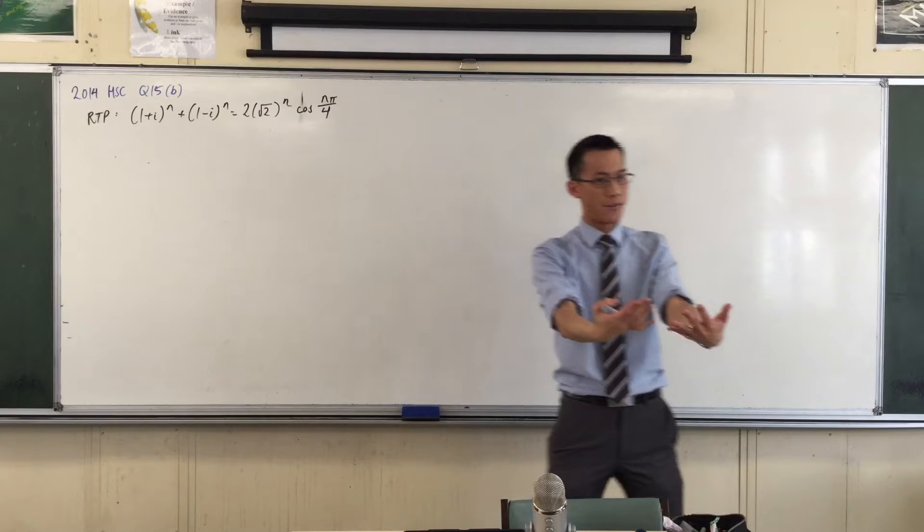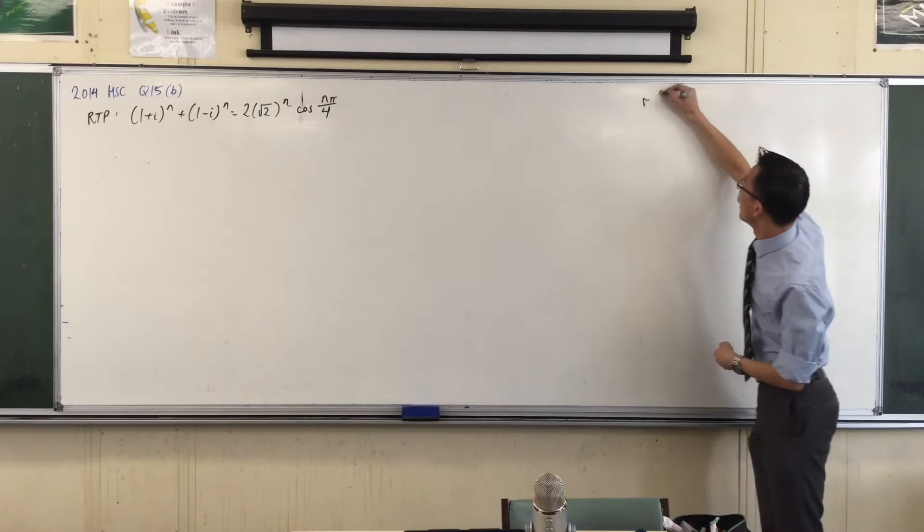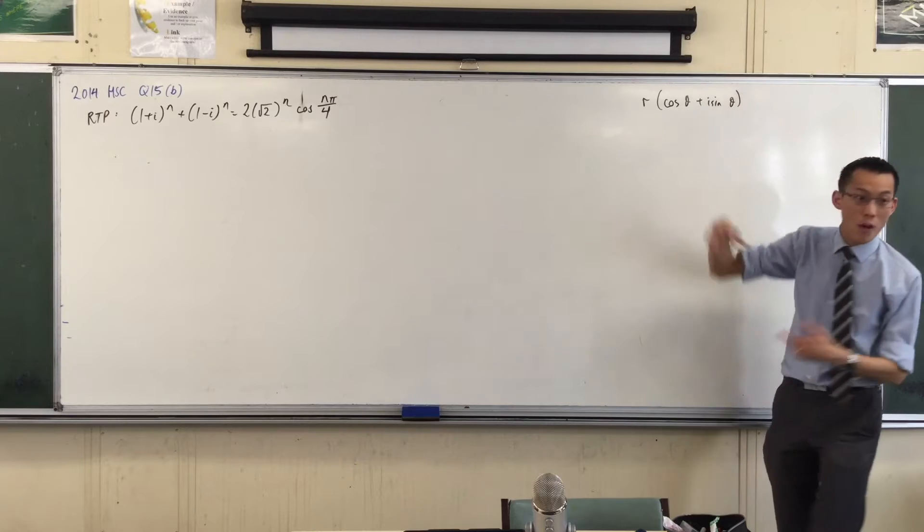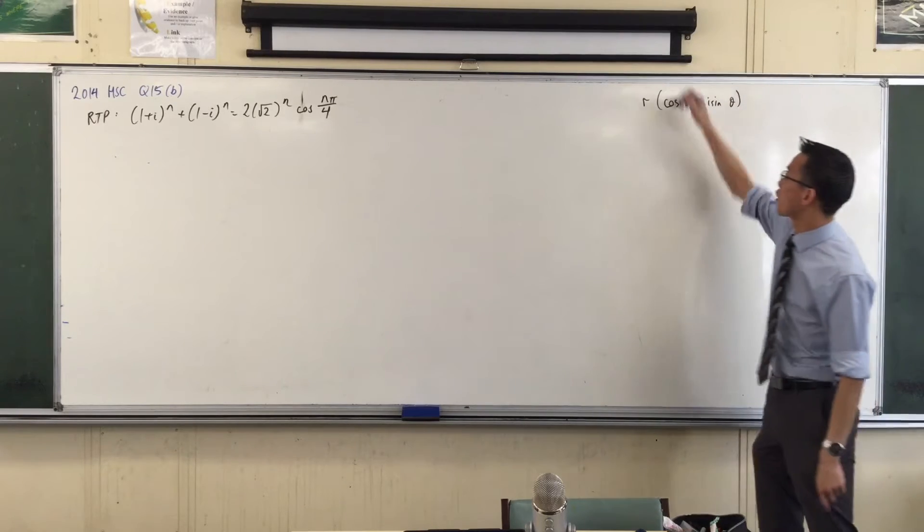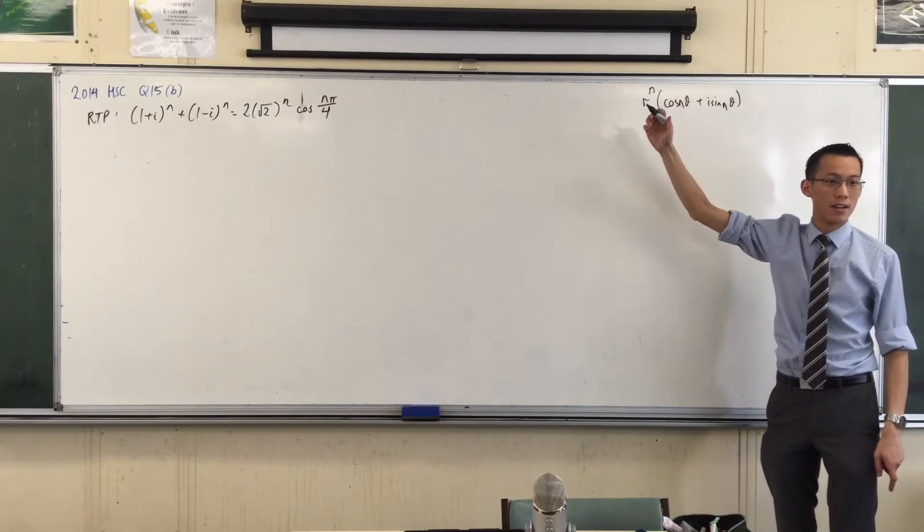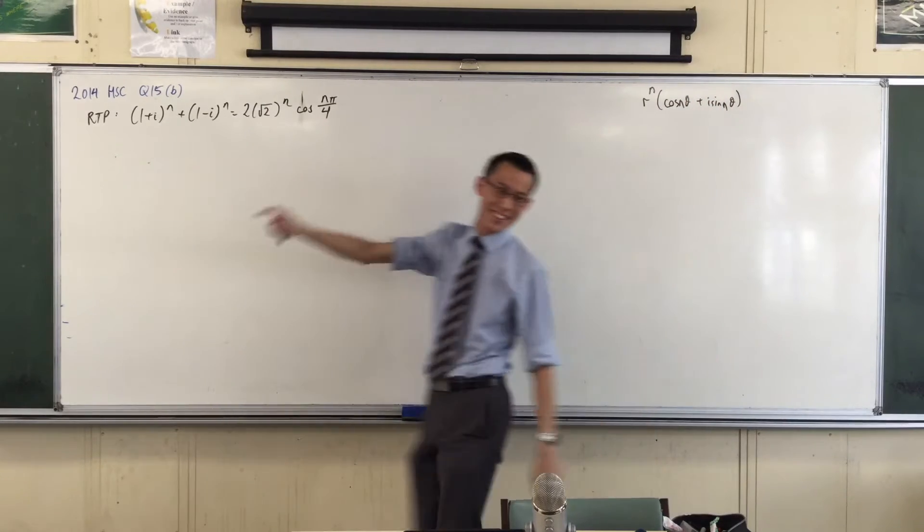We know our quote for De Moivre's Theorem is if you have a number like this and you raise it to the power N, then you're going to raise the modulus to that power and you're going to multiply the arguments by that power. That's right.